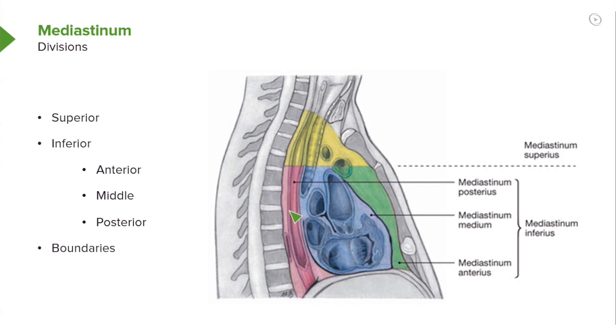The posterior mediastinum is shaded here, and I'm actually going to kind of go over here to the bronchi that are shown here and throw them into this pink shaded area. This is the posterior mediastinum, and it's located between the more inferior thoracic vertebrae and the pericardium here posteriorly.